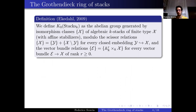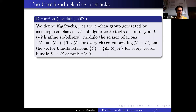Armed with this notion of algebraic stacks, we can transport Grothendieck's classical definition to stacks, which is what Ekedahl did in 2009. K0 Stacks is generated by isomorphism classes of algebraic stacks of finite type with affine stabilizers, modulo the scissor relations — the class of X equals the class of a closed substack plus the class of the open complement. We add an extra condition: for every vector bundle E over a stack X of constant rank r, the class of E equals the class of Ar times X.